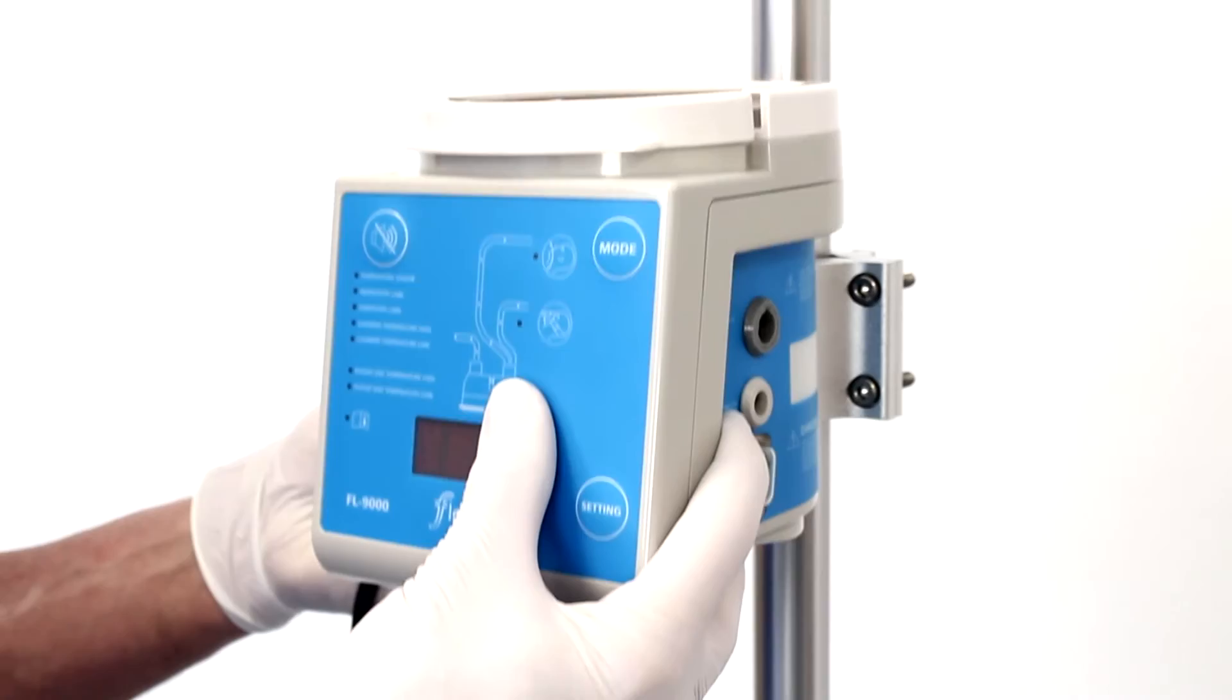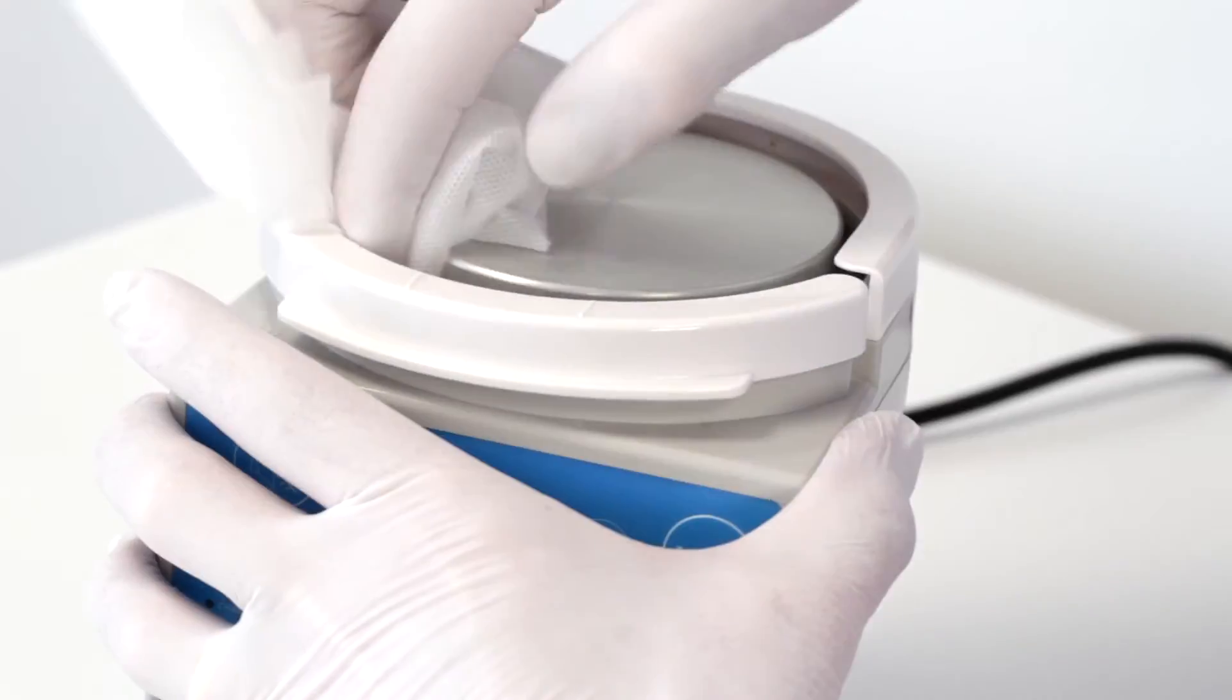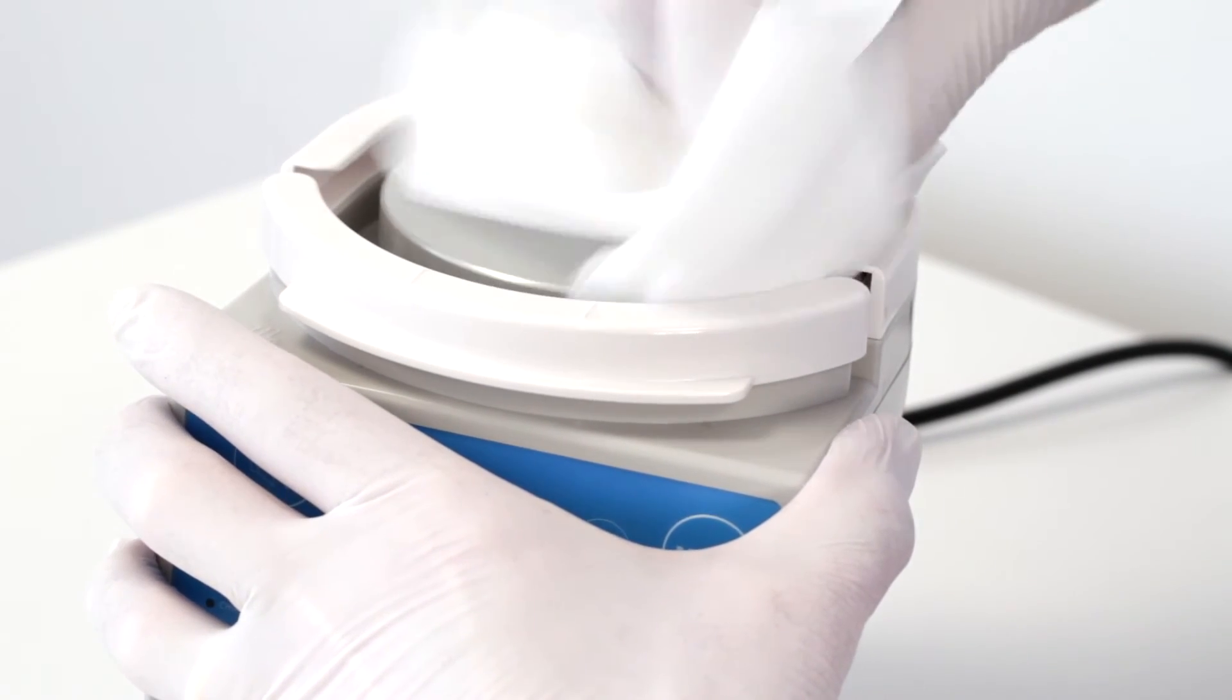Disconnect the FL9000 from the power supply. Wipe the surface with a soft damp cloth, 70% ethanol or an isopropyl alcohol wipe.